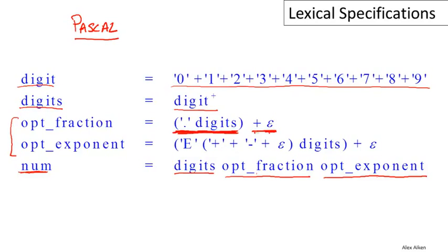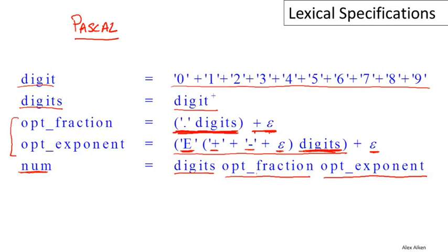The optional exponent is structured similarly but somewhat more complex. The whole exponent is optional because there's a regular expression union'd with epsilon — so either the exponent is present or not. Inside, an exponent always begins with 'E' (standard exponent notation) and always has a non-empty string of digits. Between E and the digits there's an optional sign — we know it's optional because epsilon is one of the possibilities. The sign could be negative or positive, so either there's a plus or minus sign, or no sign at all, in which case it's presumably interpreted as positive.